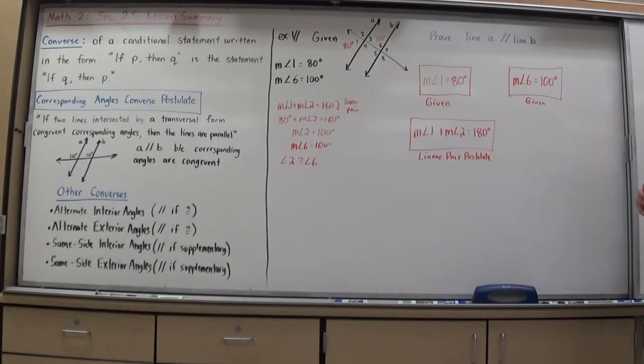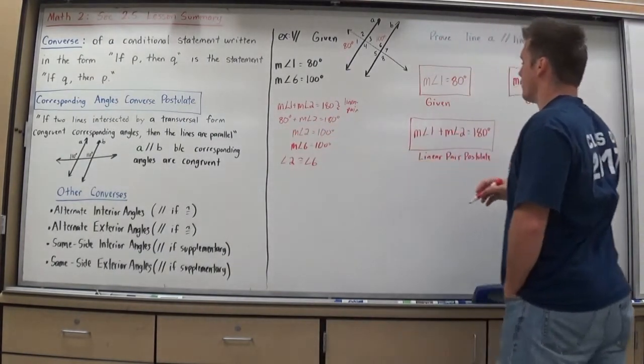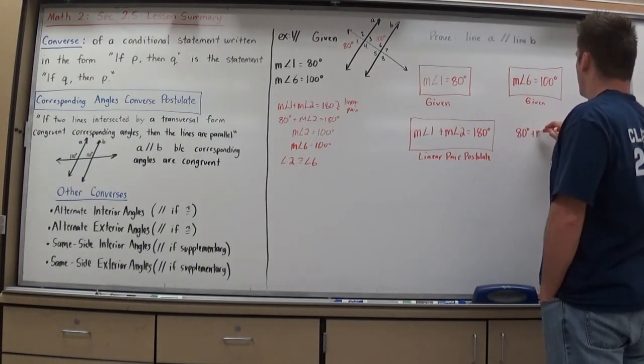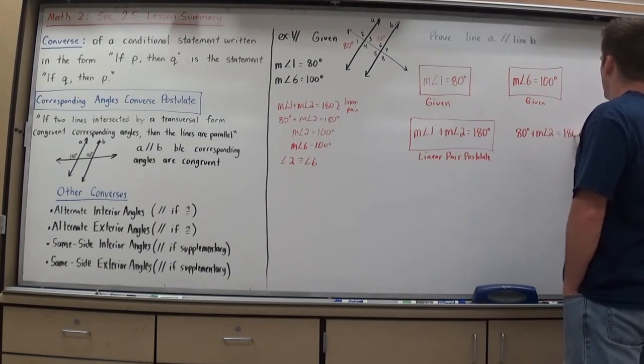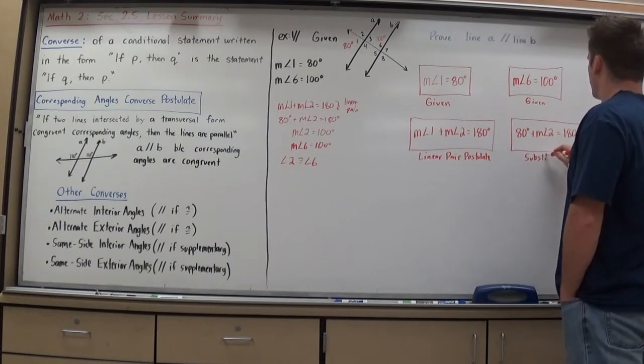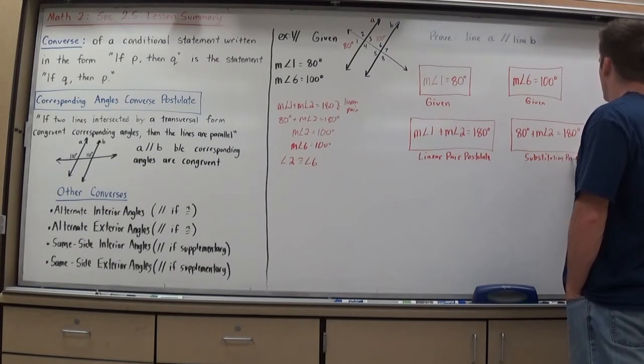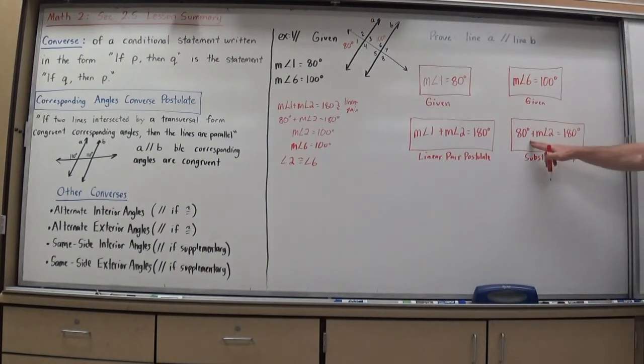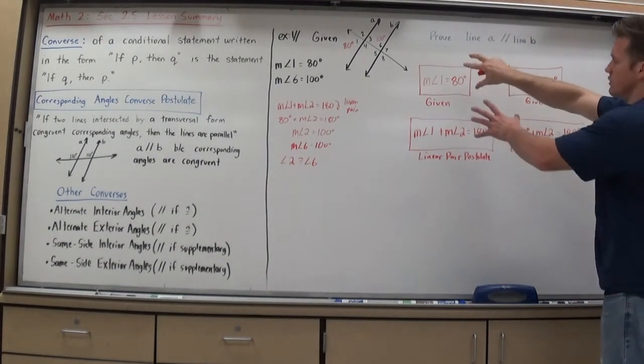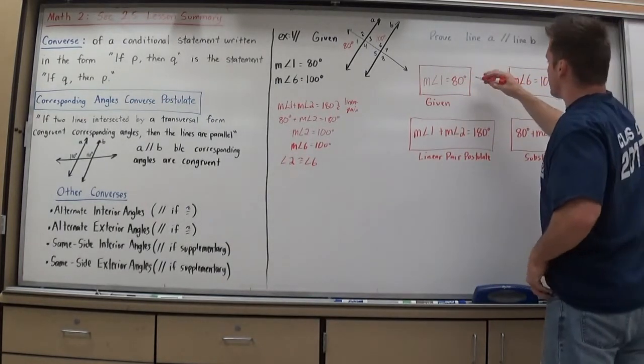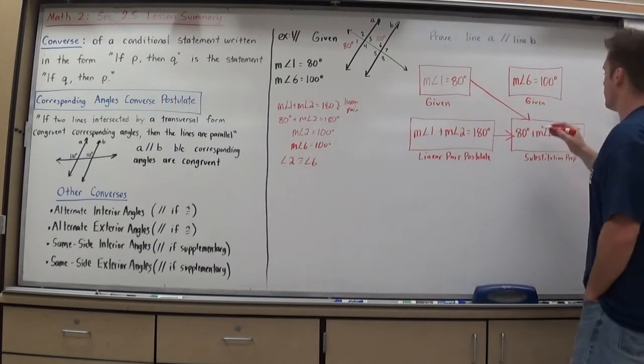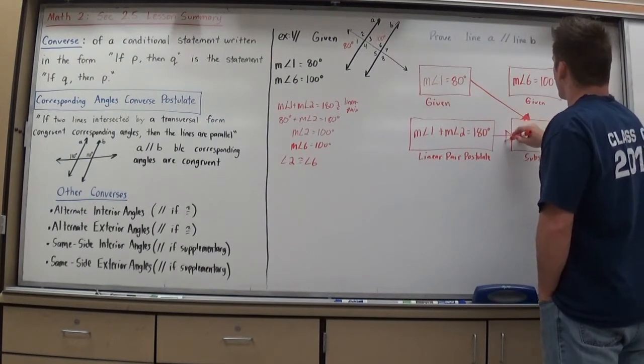So from there I wanted to say measure of angle one plus measure of angle two equals 180 degrees. So let's go measure of angle one plus the measure of angle two equals 180 degrees. And I know that because of the linear pair postulate. Then from there I substituted into it 80 degrees so I could find the measure of angle two. So I said 80 degrees plus the measure of angle two equals 180 degrees. And I knew that doing the substitution property. And I was able to do the substitution property using two things. I took the 80 and substituted it into the linear pair postulate. So I used these two ideas to create this. So that's where I start to need to branch it with arrows showing my reasoning like how I came up to that.